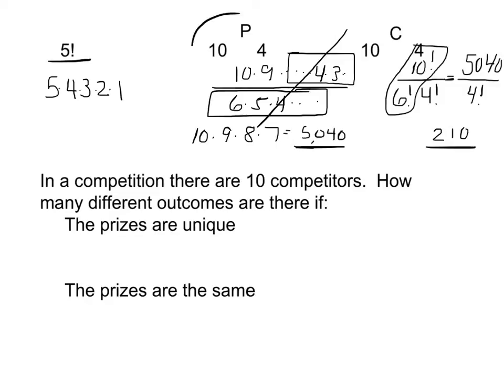So how is this and this, what's that look like in an actual situation? So in a competition, there are 10 competitors. How many different outcomes are there if there are 4 people who win and the prizes are unique? The prizes are different. So whether you finish 1st, 2nd, 3rd, or 4th, it does actually matter. Well, that's where the 5,040 come in.